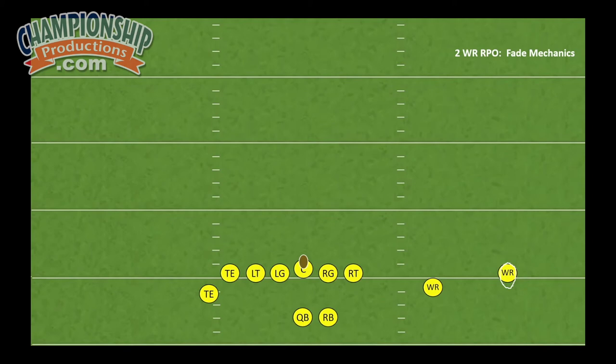So first things first is to cut that split down to give our quarterback room to throw the football. Second, as we run our fade, we need to come off the ball as if we're running our 40-yard dash. We are vertically trying to step on the toes of that cornerback — trying to cut his cushion down to zero as quickly as we possibly can.